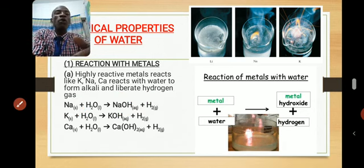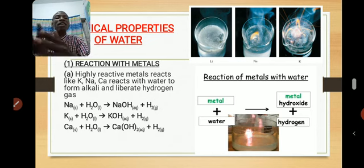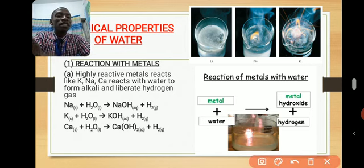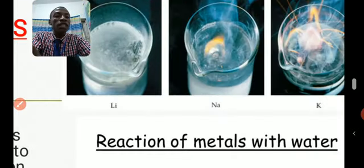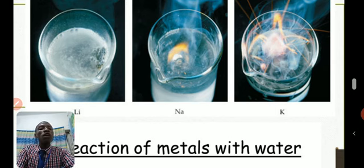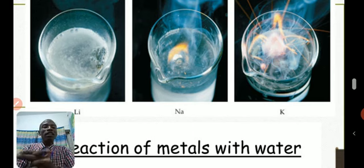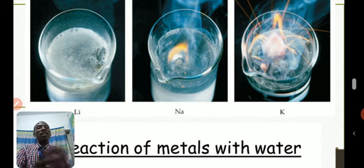Potassium also gives KOH and hydrogen gas. Calcium also does the same thing but at a very slow pace. The more reactive the metal, the more vigorous the reaction. Potassium reacts violently with water, sodium reacts vigorously — you can see a flame with sodium — while lithium reacts without a visible flame but the reaction is still quite vigorous.